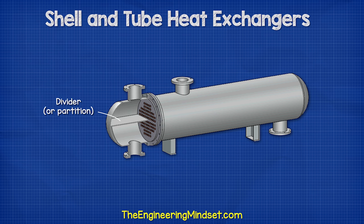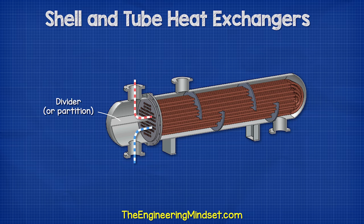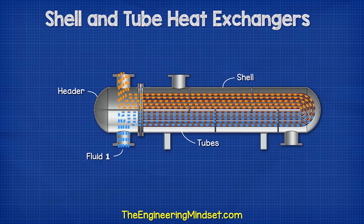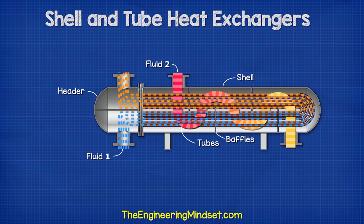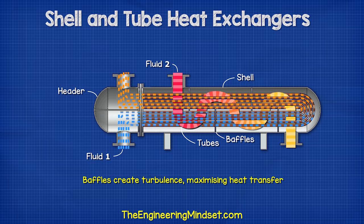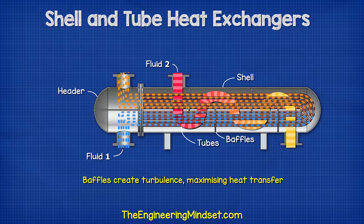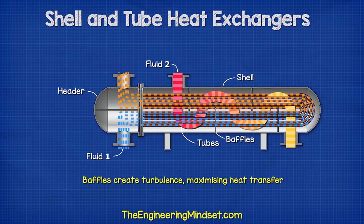Inside the header is a sheet of metal known as the divider or the partition. This separates the tube ends, enabling the fluid to flow into and then out of the heat exchanger tubes. Fluid 1 will flow through the header, into and around the tubes, then back to the header. Fluid 2 will enter the shell and surround the outside of the tubes. The baffles will partially block the flow, which will force the fluid to turn multiple times, creating a turbulent flow and ensuring that fluid 2 mixes with itself, which ensures maximum heat transfer.